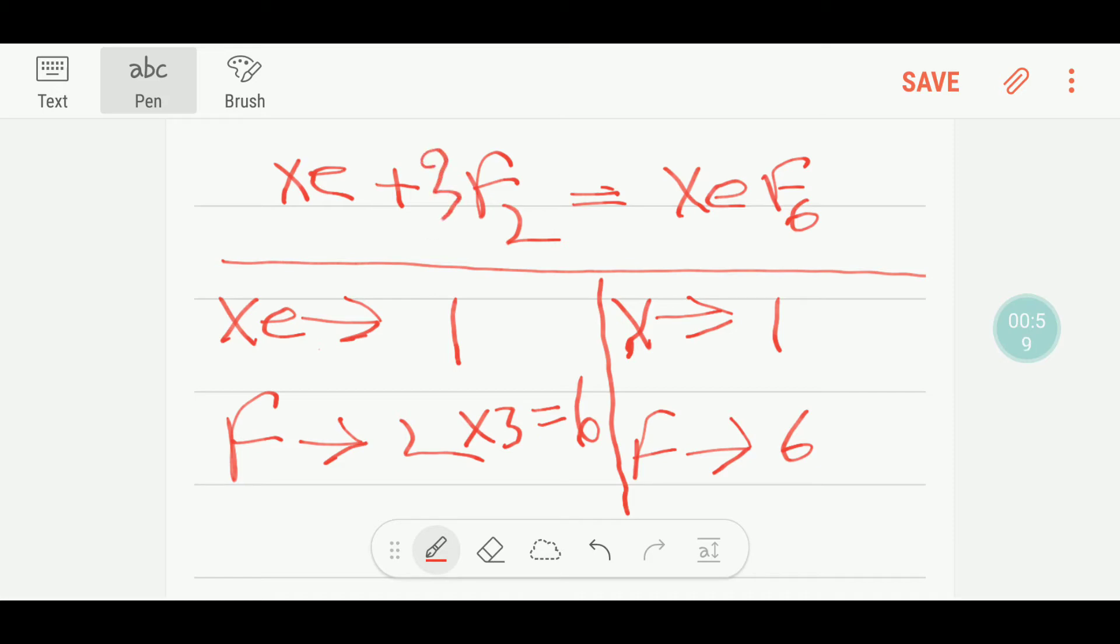So our xenon is balanced, our fluorine six to six is balanced. So how do you think to balance this reaction in your exam? You can think like this way.